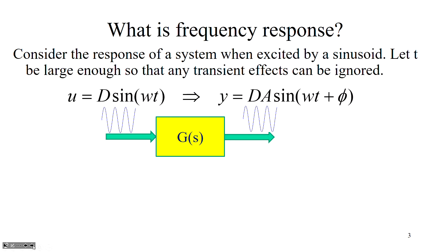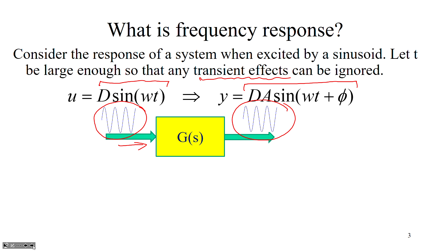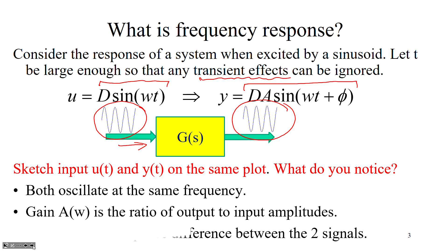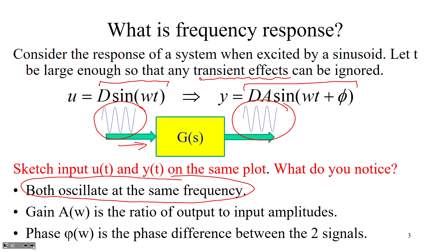So what is frequency response? We assume a sinusoidal signal goes into a system, and once the transient effects have died down, you get a sinusoidal signal coming out. The input sinusoid is d·sin(ωt) and the output sinusoid is d·A·sin(ωt + φ). Both oscillate at the same frequency, but the key things to notice are that the amplitudes are different — the output has a constant A — and the output also has a different phase to the input.